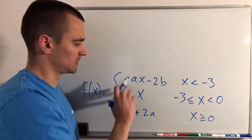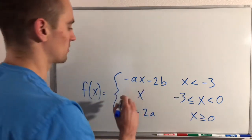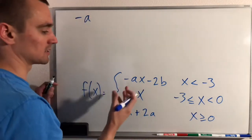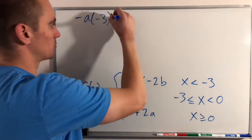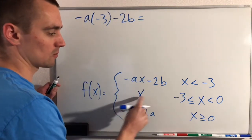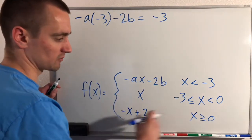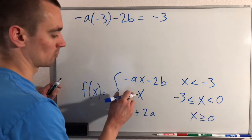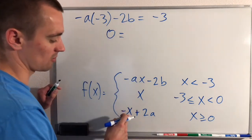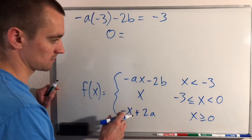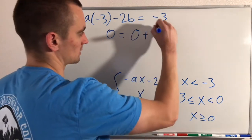To do that, all we need to do is take this function and this function, set them equal, and plug in negative 3 for x. So we'll have negative a — a constant we're trying to find — we plug in negative 3 for x, minus 2b, and set that equal to this function with negative 3 plugged in for x. We also plug in 0 for x in both functions at the x equals 0 boundary, giving us 0 equals 0 plus 2a.